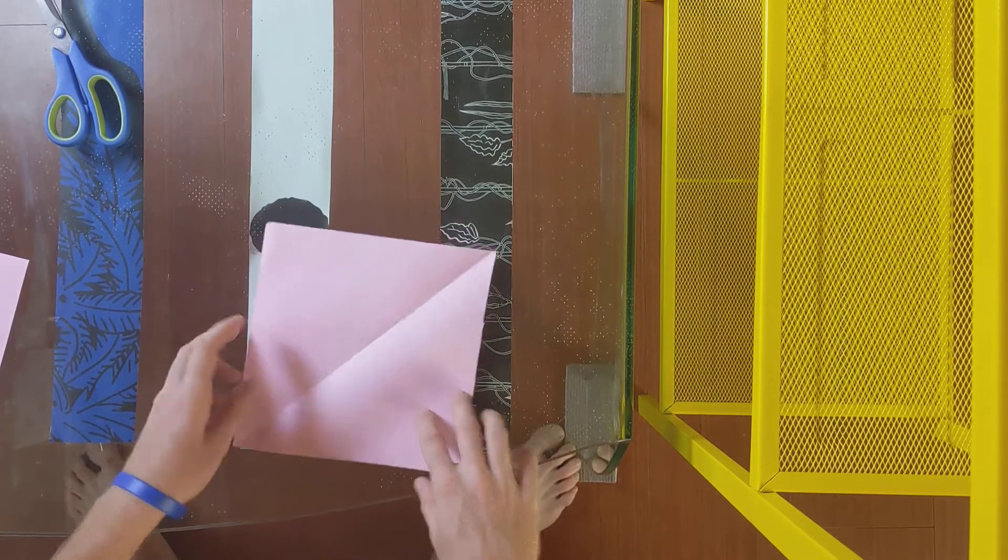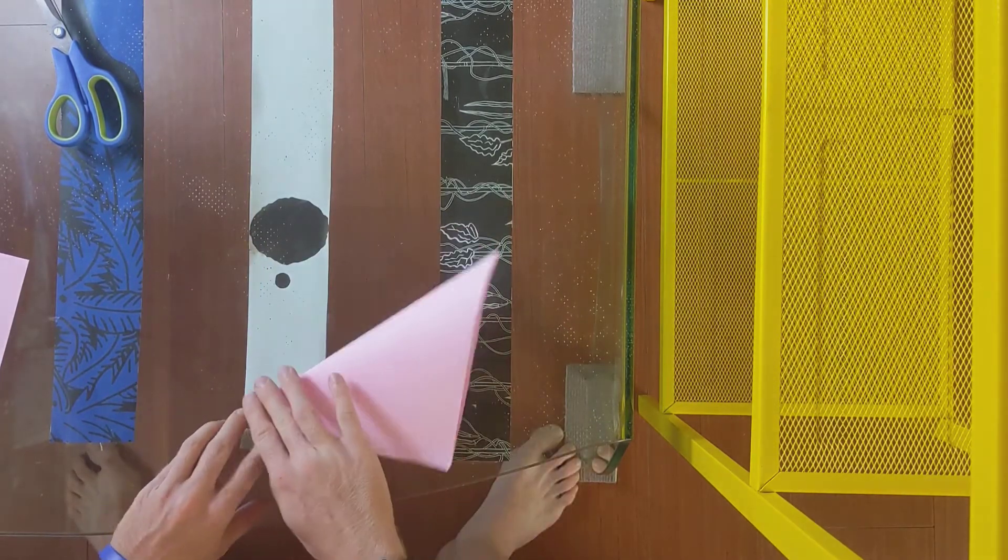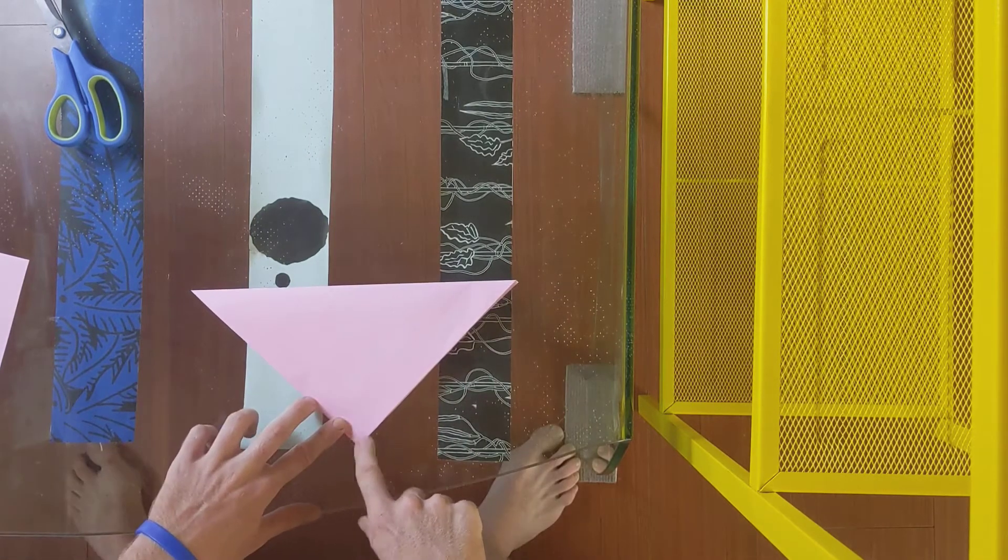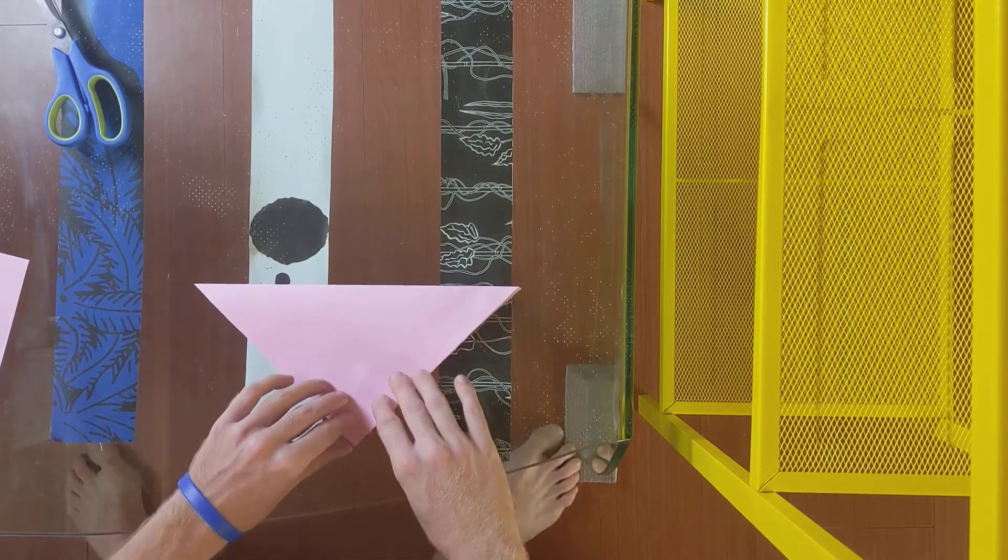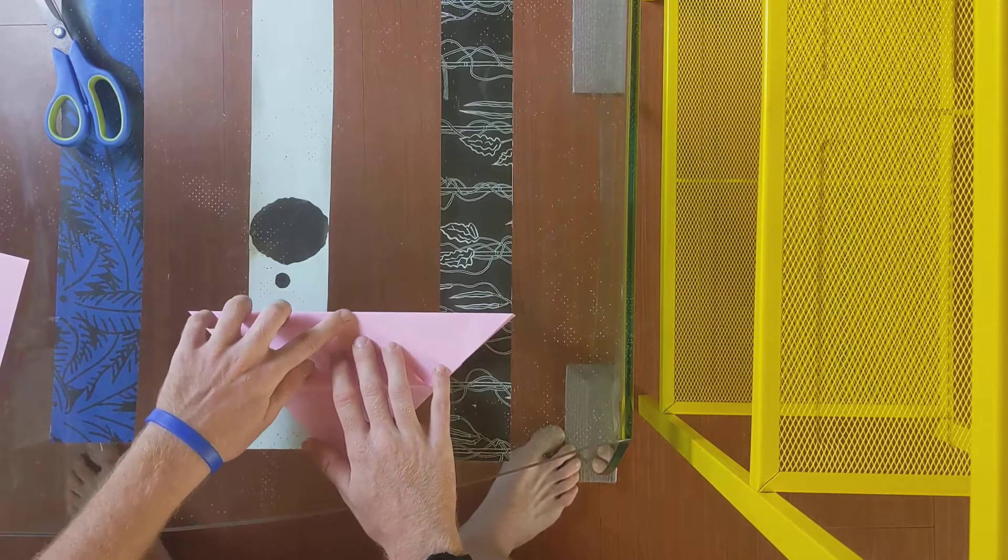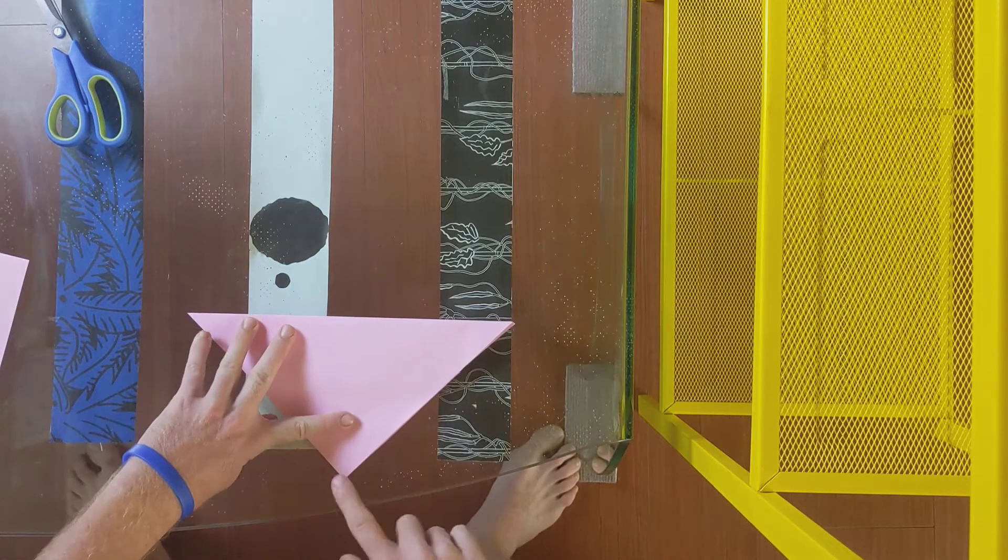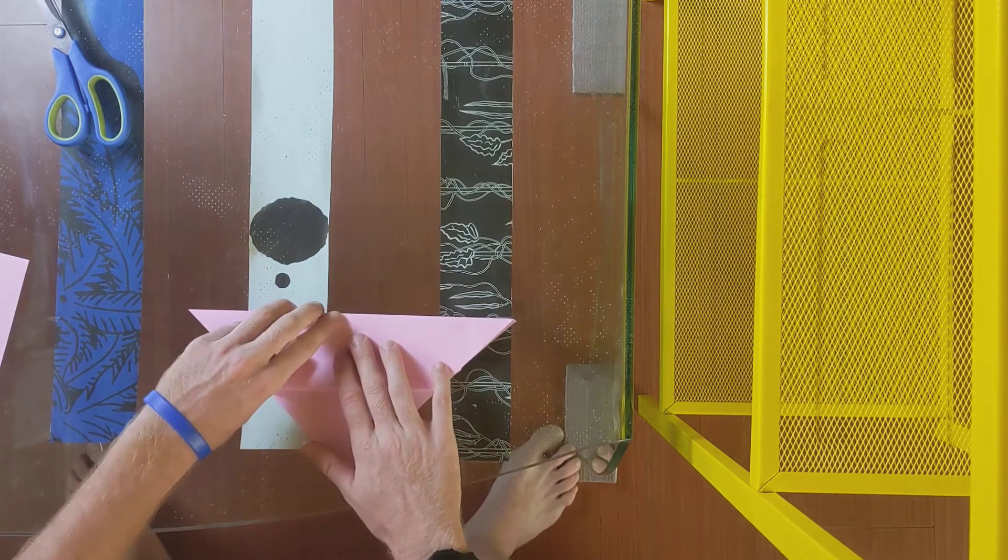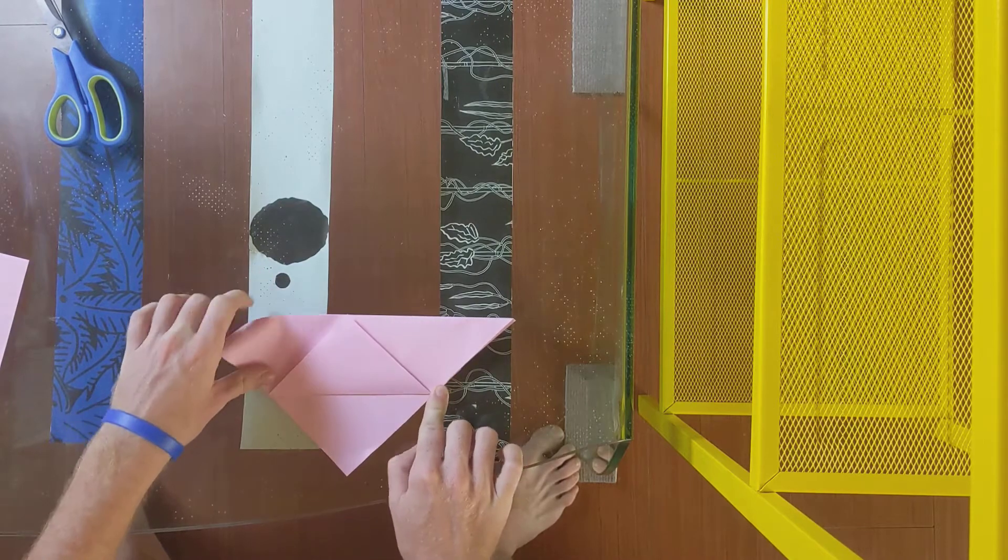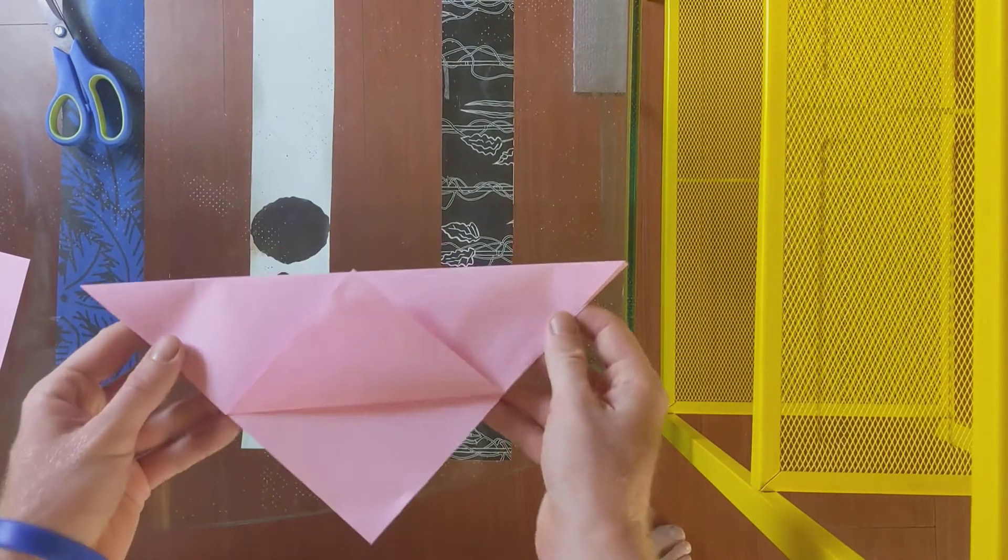Okay so the first step is to fold it like this. Fold your paper into a triangle and have the point facing down. Next you will take this bottom point and fold it to the top. So now your paper will look like this.